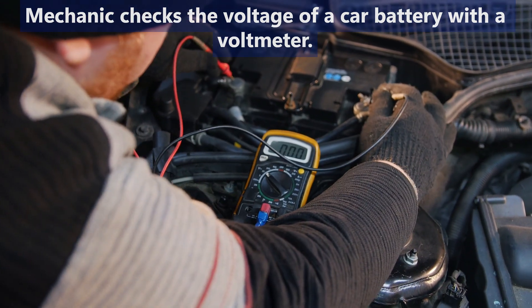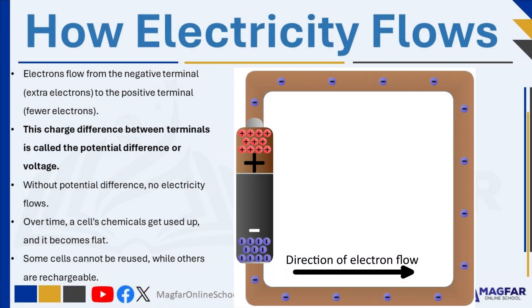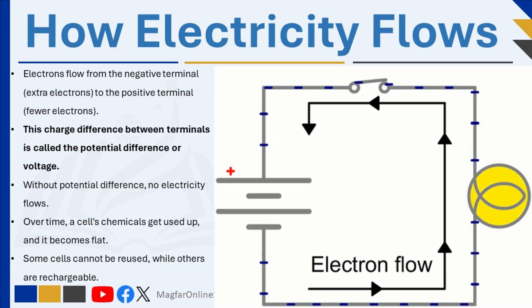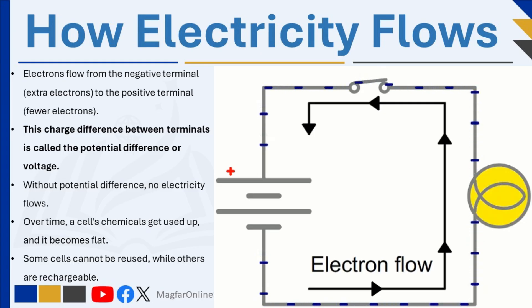Electricity always flows through a circuit from an area with extra electrons — the negative terminal — to an area with fewer electrons — the positive terminal. The negative terminal has more electrons than the positive terminal. This difference in charge between the negative and positive terminals of a cell is called potential difference, or voltage. Without this potential difference, electrons wouldn't flow, and there would be no electricity.